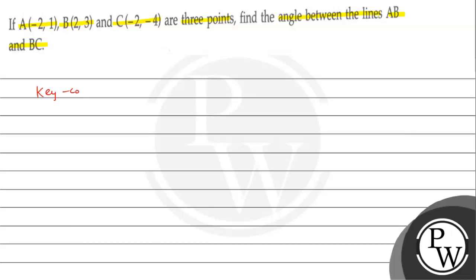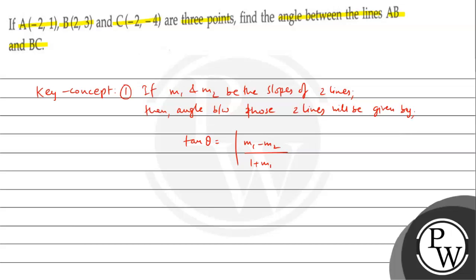First, let's write key concept. If M1 and M2 be the slopes of 2 lines, then angle between those 2 lines will be given by the relation tan θ equals modulus of (M1 minus M2) upon (1 plus M1 M2).